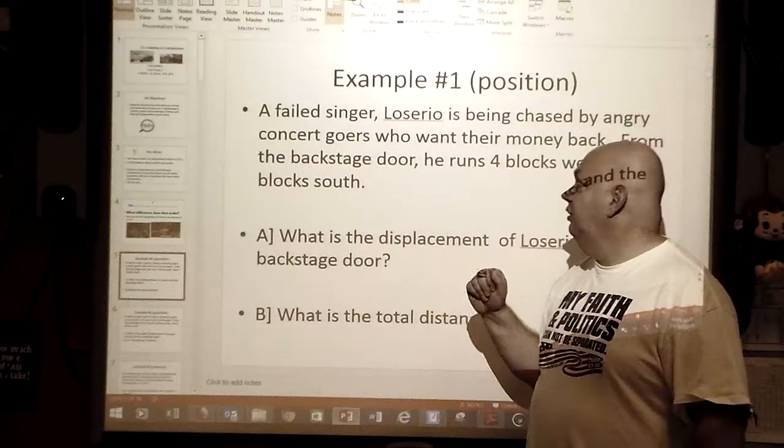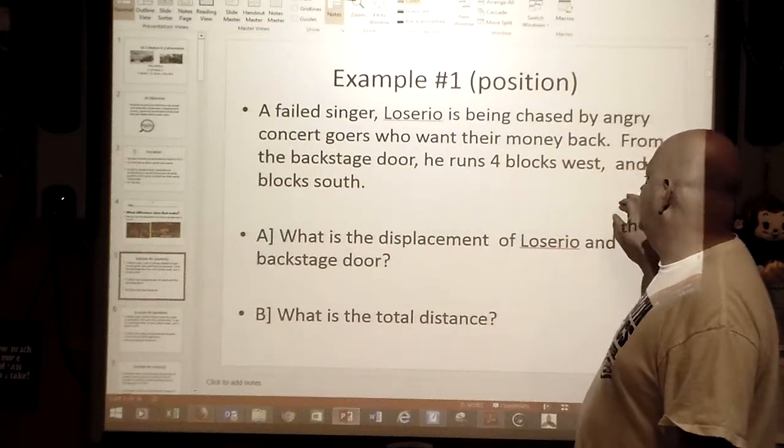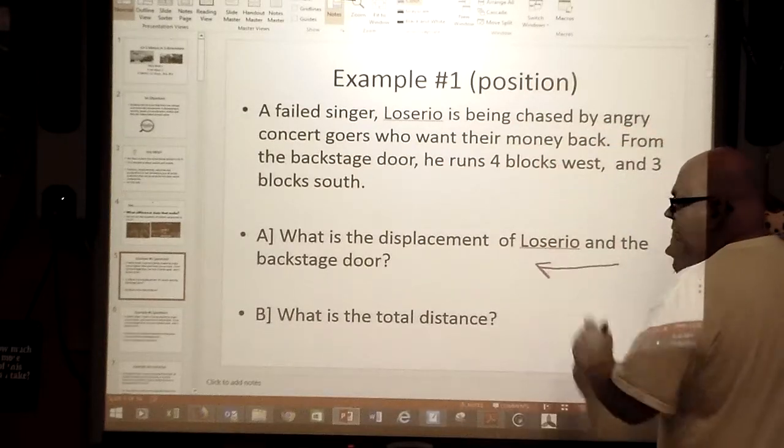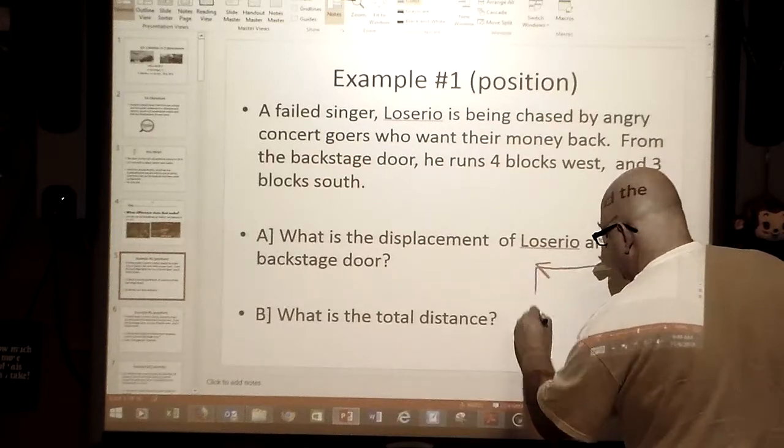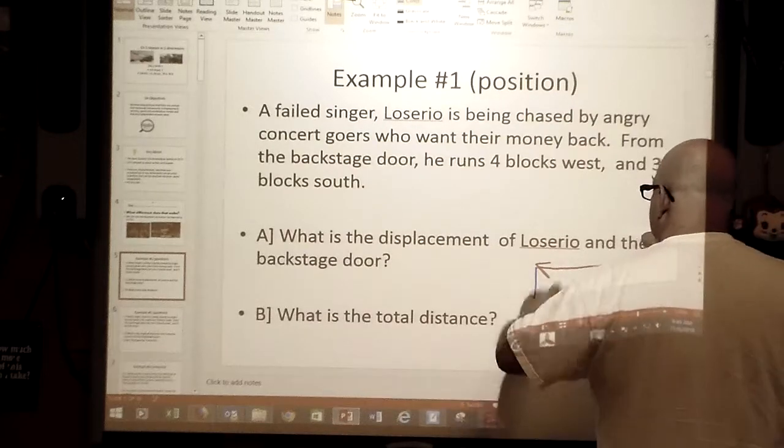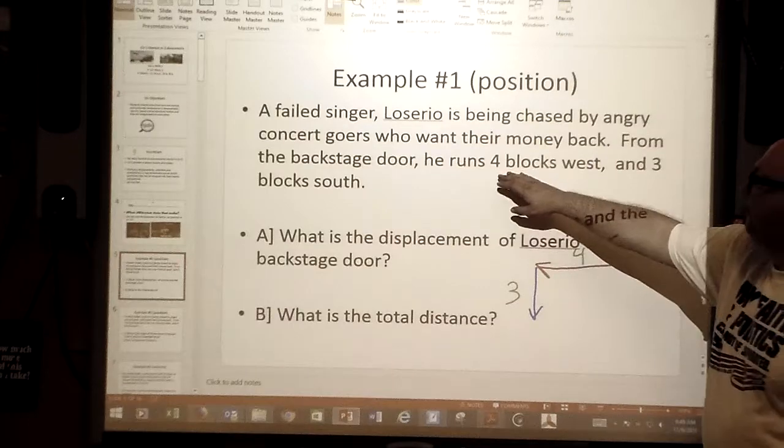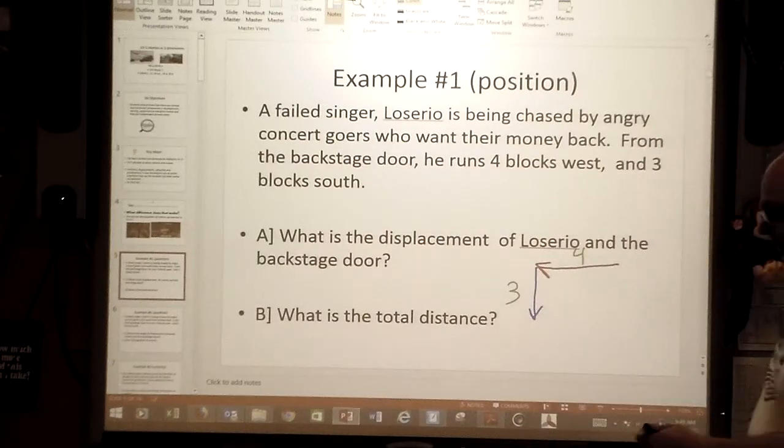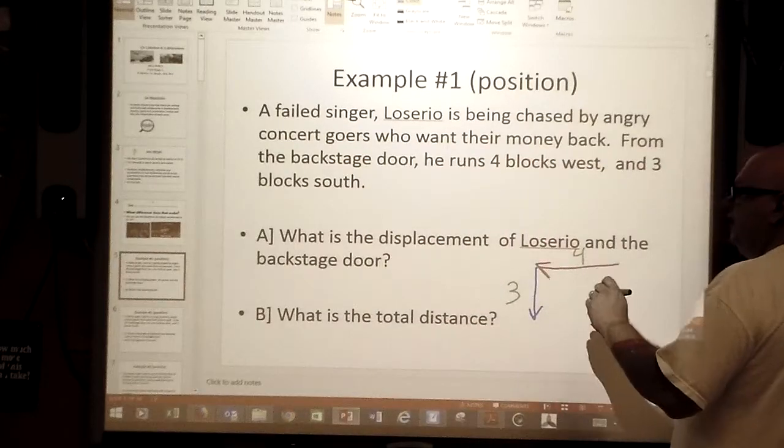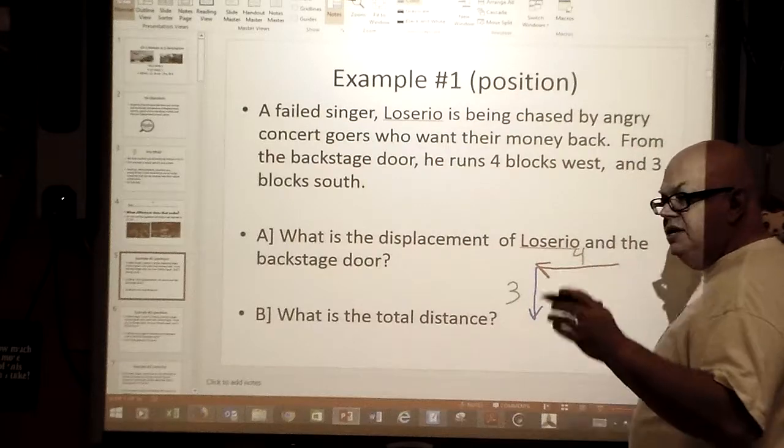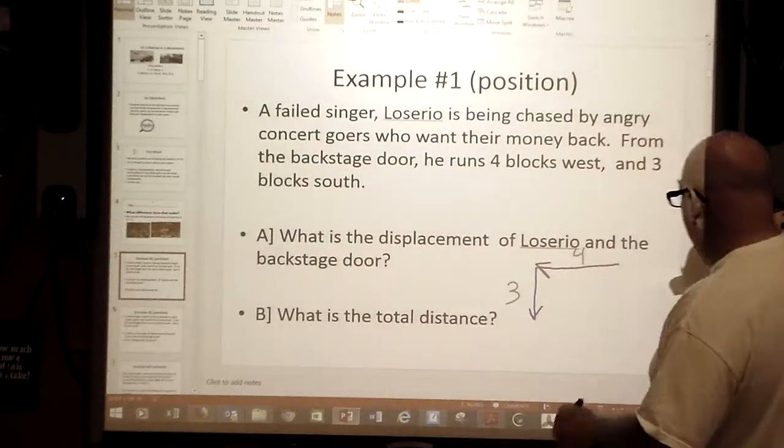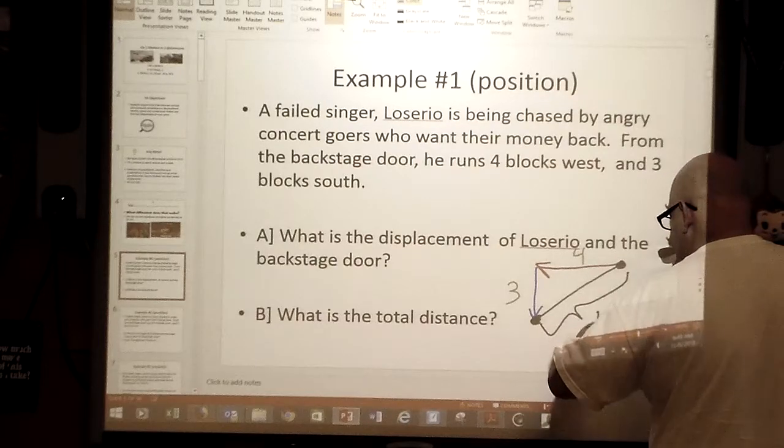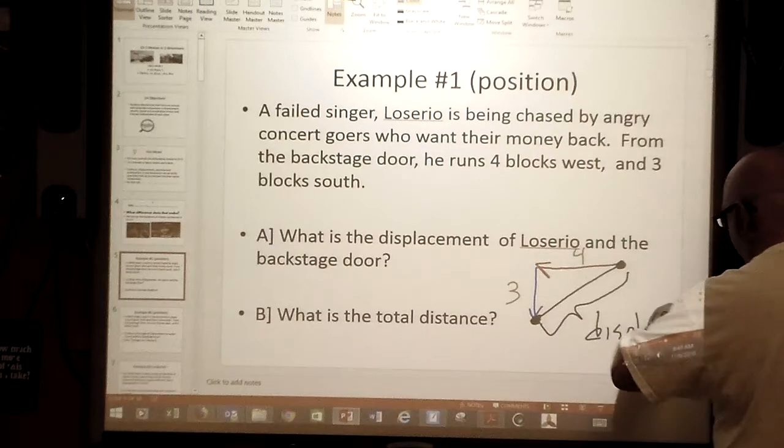In this case, we have our failed singer who's running four blocks west and three blocks south. Now remember, when they give the first thing, that's the one that goes in order. So if he's running four blocks west and then three blocks south. The thing comes down to: what is the total distance and what is the displacement? There's a difference.